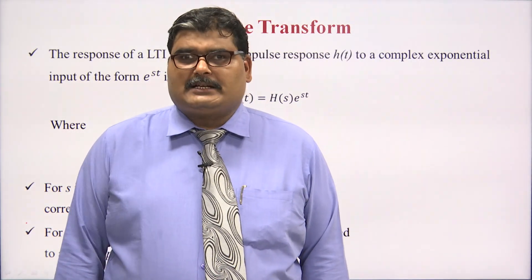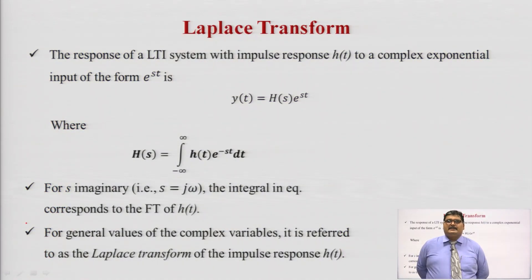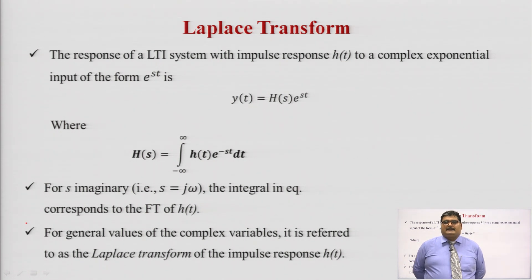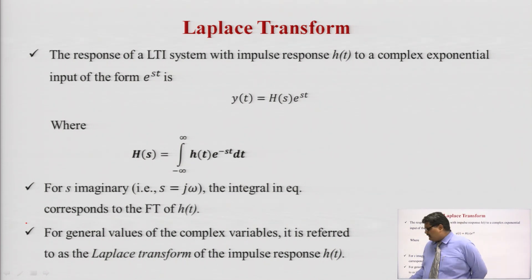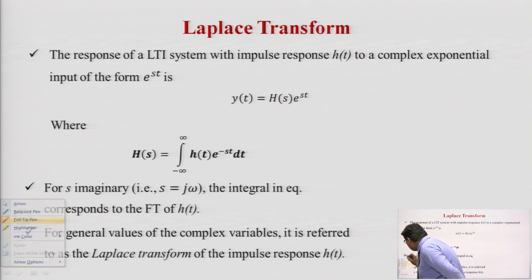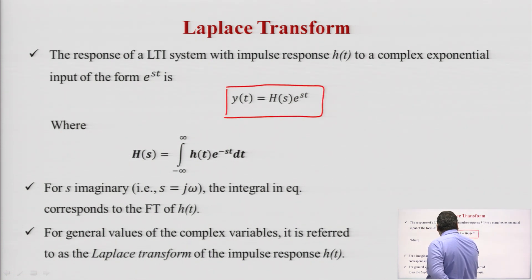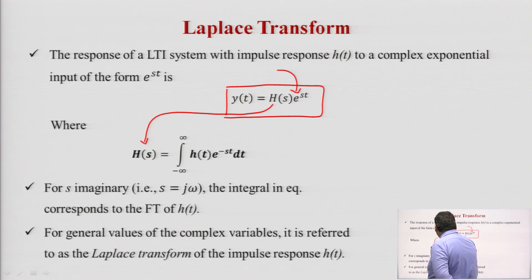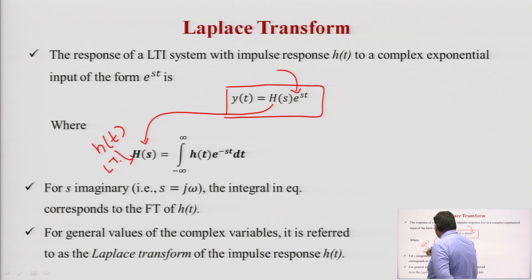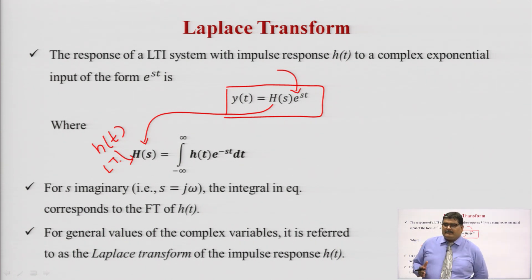To better understand the Laplace transform, let us have an LTI system — that is, a linear time-invariant system — whose impulse response is denoted as h(t). Suppose the input of this system is e^(st). Then the output will be defined as y(t) = H(s)·e^(st). Here H(s) is the Laplace transform of the impulse signal, defined as the integral from minus infinite to plus infinite of h(t)·e^(-st) dt.